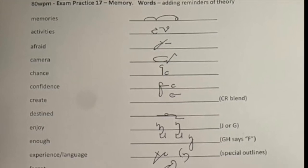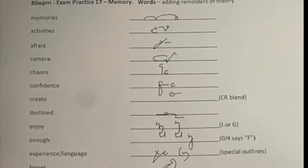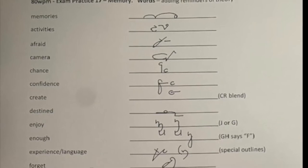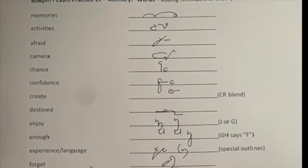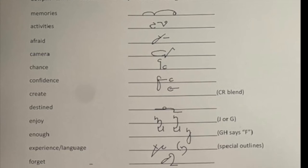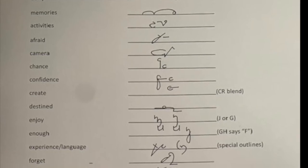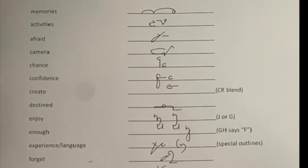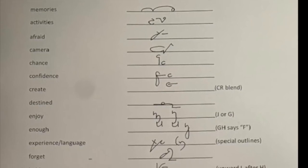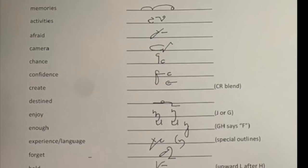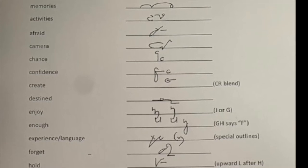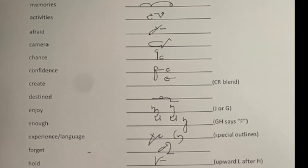Next one, afraid. Starts with the A indicator. Remember we don't put babies on the floor, so start halfway and then loop down to the line to make the FR blend. And you will know by now that we don't join T's and D's to an upward R. So the D goes halfway down the R. Next one, camera. CM blend, so nice and wide like a rugby ball. Insert the E indicator. That's a recommendation only. You don't have to do that so that you can clearly see the R and then the final A indicator.